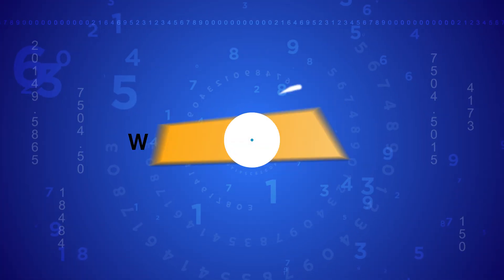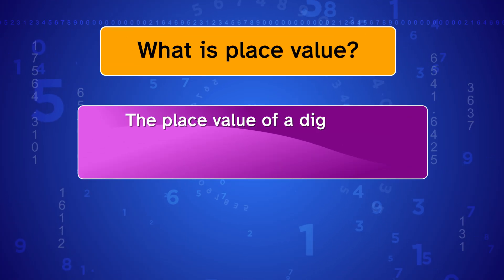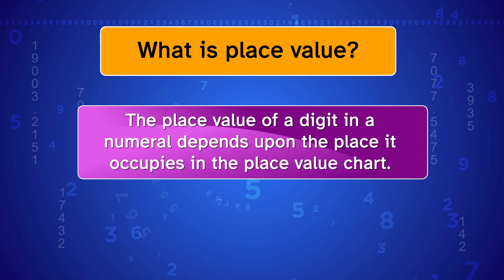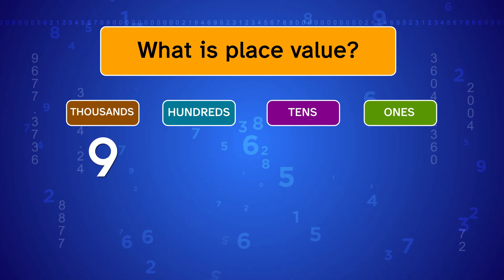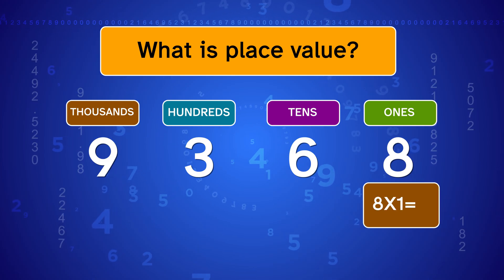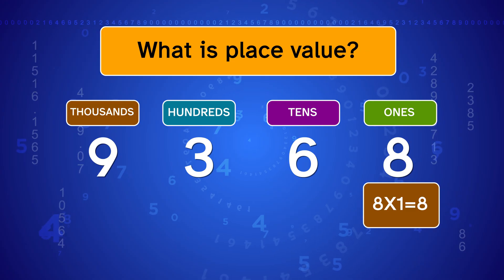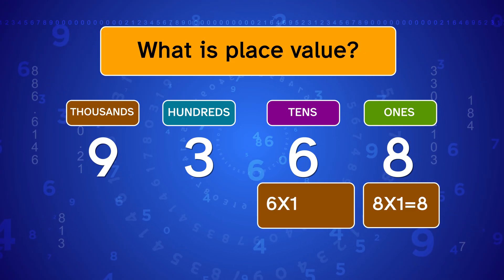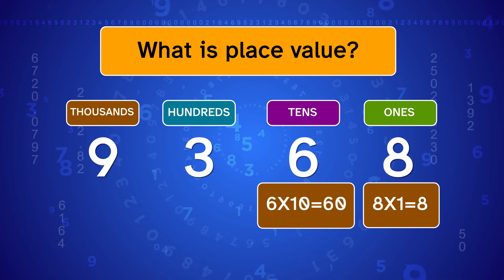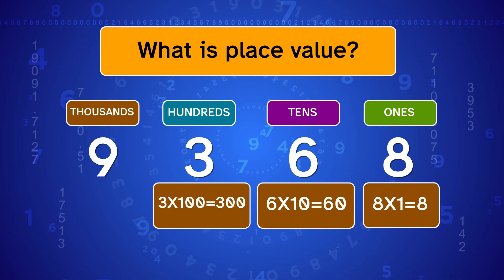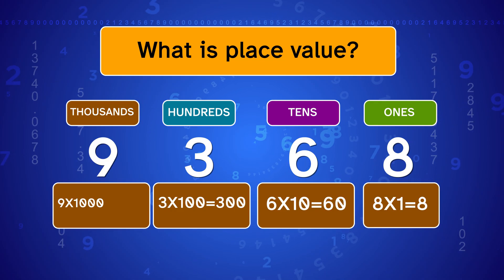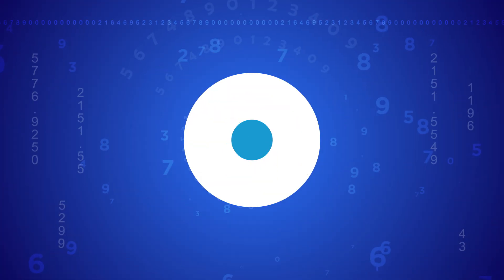What is place value? The place value of a digit in a numeral depends upon the place it occupies in the place value chart. For example, in the numeral 9,368: eight occupies the ones place, so its place value is 8 × 1 = 8; six occupies the tens place, so its place value is 6 × 10 = 60; three occupies the hundreds place, so its place value is 3 × 100 = 300; and nine occupies the thousands place, so its place value is 9 × 1,000 = 9,000.